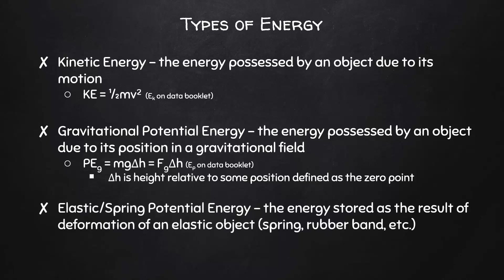The last type of energy for this unit is elastic or spring potential energy. This is the energy stored as a result of the deformation of an elastic object, like a spring, or rubber band, or something that behaves in a similar way. The equation for elastic or spring potential energy is ½ times the spring constant times the change in length squared.